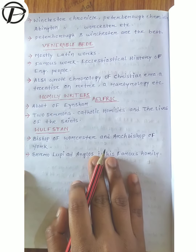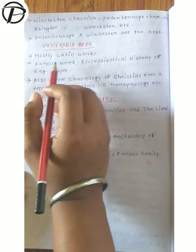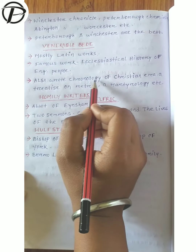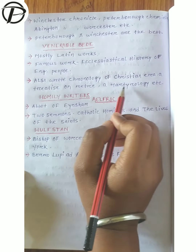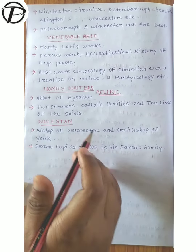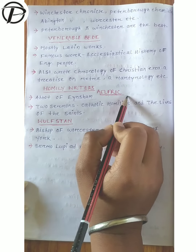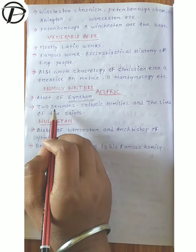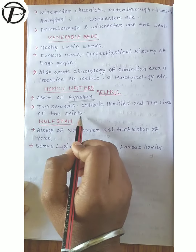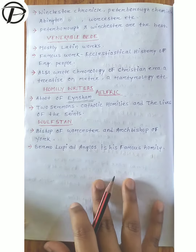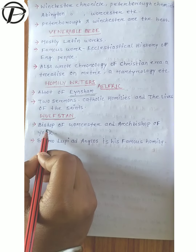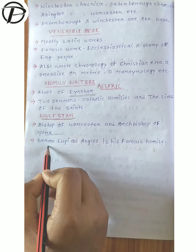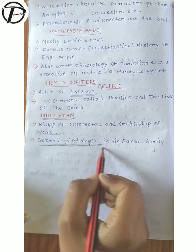Then Venerable Bede, who mostly wrote Latin works. His famous work is the Ecclesiastical History of the English People. He also wrote the Chronology of the Christian Era, a treatise on meter, a martyrology, etc. Then there are two homily writers. The first is Aelfric, the abbot of Eynsham, who wrote two sermons: Catholic Homilies and Lives of the Saints. The last is Wulfstan, the bishop of Worcester and archbishop of York, whose famous homily is Sermo Lupi ad Anglos.